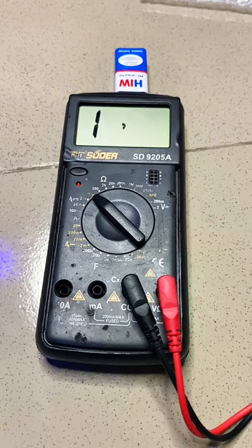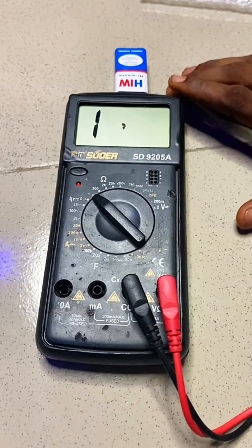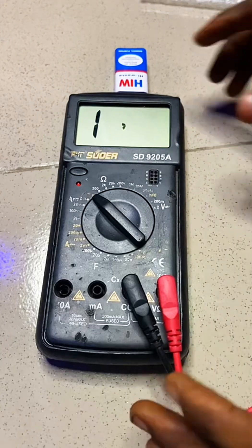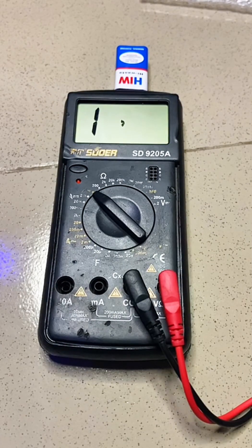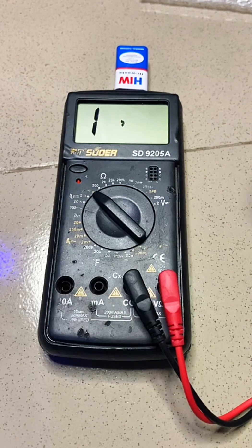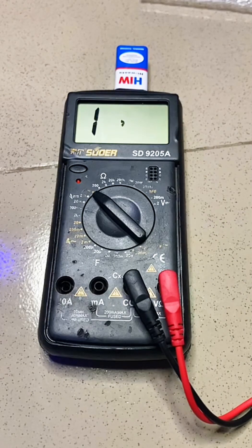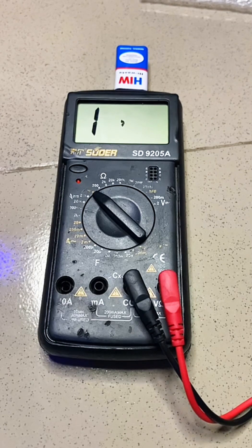A multimeter is a device that helps us to test components to know whether they are still good or not good. With the help of a multimeter, you will know the exact component that you're testing, whether it's still working or not working, and you'll know a circuit that you're testing whether it's still working or not working.